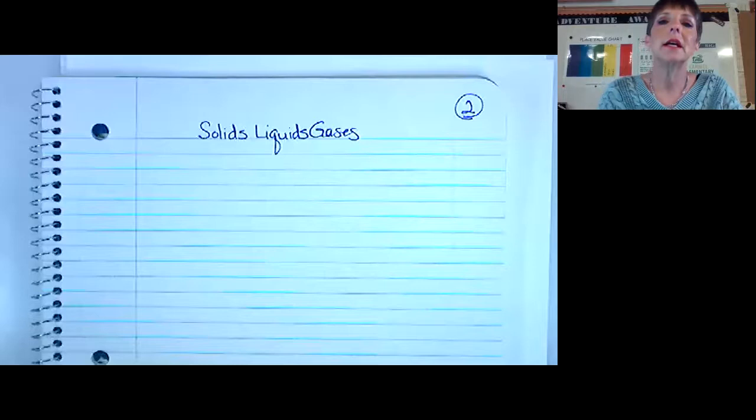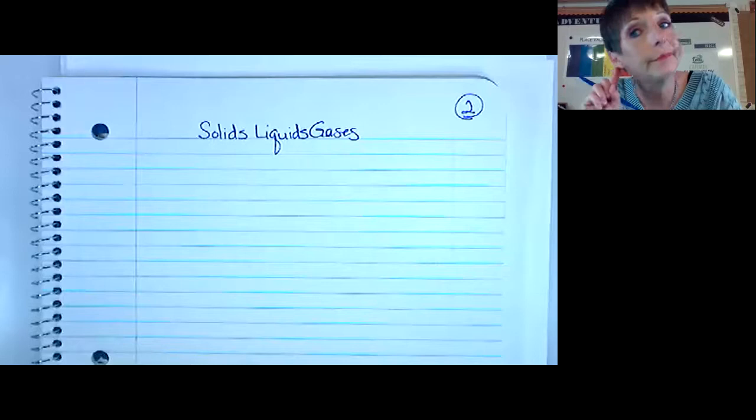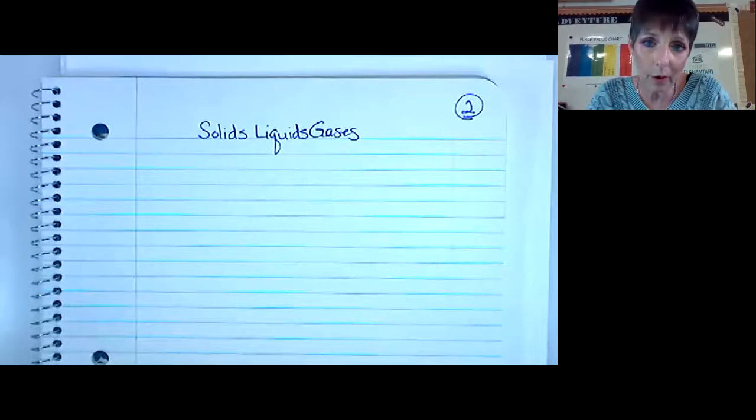We talked about boiling and freezing point a couple of days ago and the physical state of water being solid, liquid, or gas. Water as a solid is ice, the liquid form of water is just water, like rain, and the gas form of water is steam.